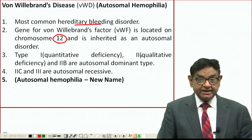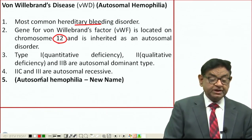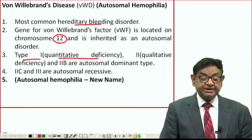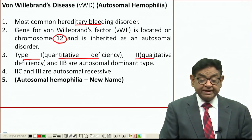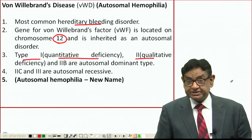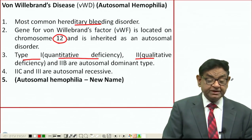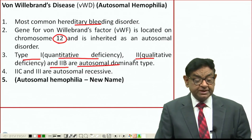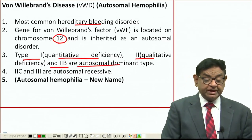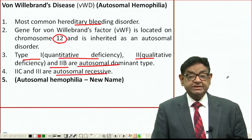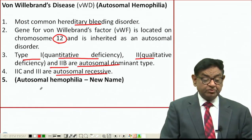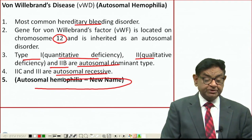It is an autosomal disorder, in contrast to Haemophilia A which is X-linked recessive. Type 1 is a quantitative deficiency of von Willebrand factor; Type 2 is a qualitative deficiency. Type 2B is autosomal dominant, but Type 2C and Type 3 are autosomal recessive — that's why von Willebrand disease is now known as autosomal haemophilia.